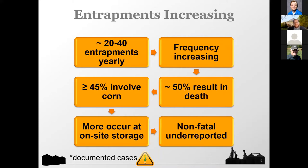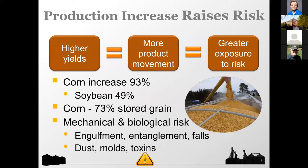Since we depend on news clippings, it's highly likely that there are more under-reported non-fatal cases than fatal ones. One of the trends explaining why we still see consistent cases despite all the work done is that over the years we've seen higher yields, more product movement, and all that leads to greater exposure. If you're handling grain more, you have greater exposure, which increases your risk overall.